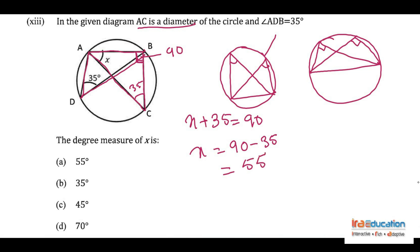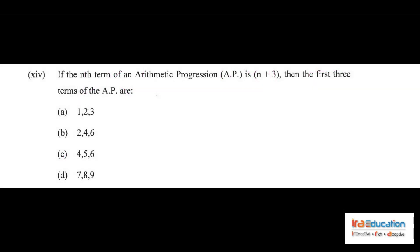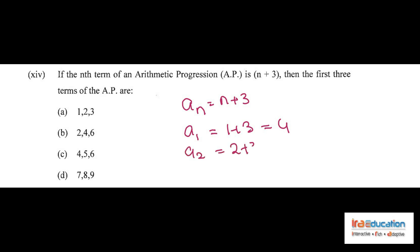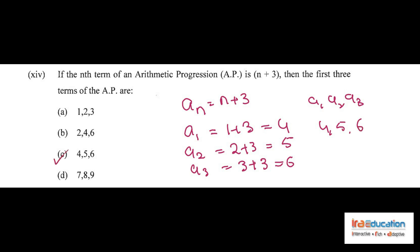Problem 14 states the nth term of an arithmetic progression is n plus 3. Substituting: a1 equals 1 plus 3 equals 4, a2 equals 2 plus 3 equals 5, a3 equals 3 plus 3 equals 6. Therefore the first three terms are 4, 5, 6 and option C is correct.